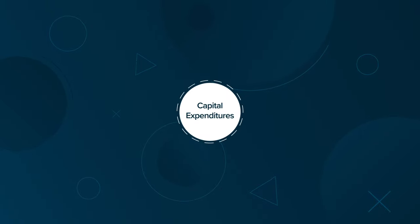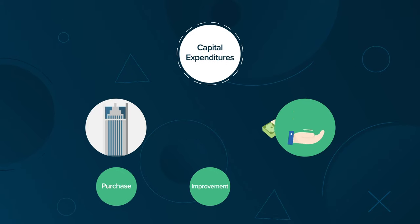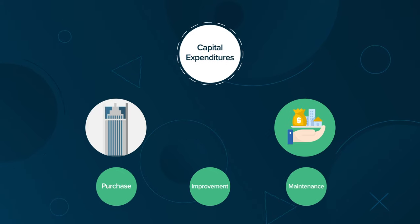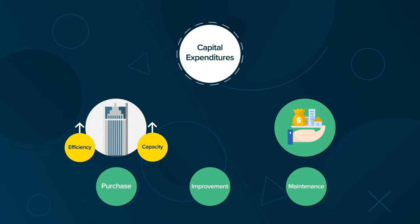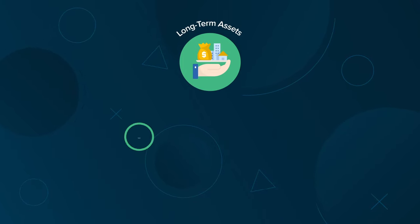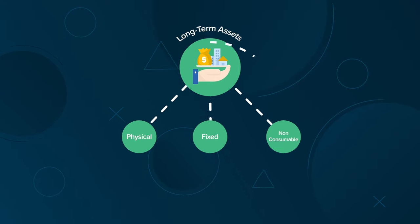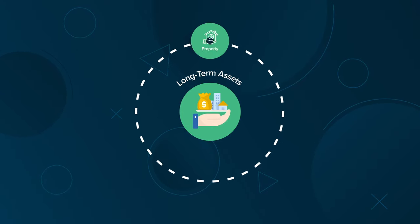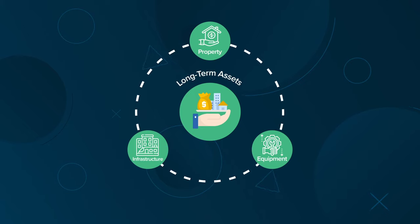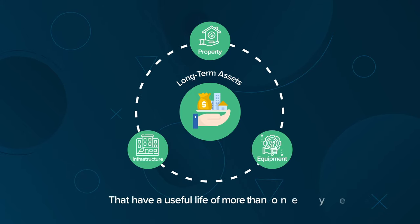Capital expenditures refer to funds that are used by a company for the purchase, improvement, or maintenance of long-term assets to improve the efficiency or capacity of the company. Long-term assets are usually physical, fixed, and non-consumable assets, such as property, equipment, or infrastructure, and that have a useful life of more than one year.